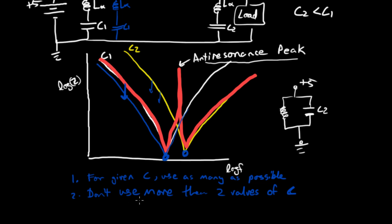Second, don't use more than two values of a capacitor. So here we have C1 and C2. You never want to have a C3, a C4, a C5, anything more than two. I don't think you should have more than two.